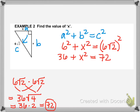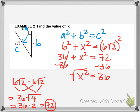So 72 is what 6 square root of 2 squared equals. Now to get X squared by itself, we subtract 36 from both sides: X squared equals 72 minus 36, which is 36. Once you get to variable squared equals a number, you take the square root of both sides. The square root of X squared equals X, and the square root of 36 is 6. So that missing side has a length of 6.